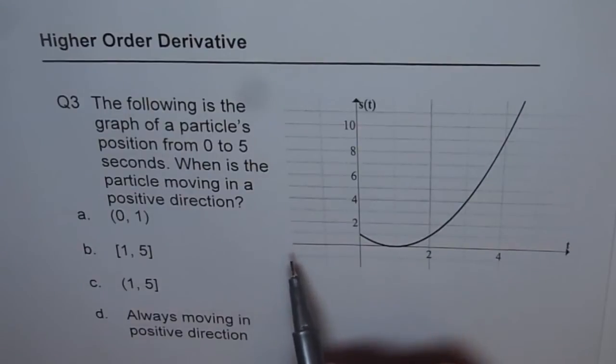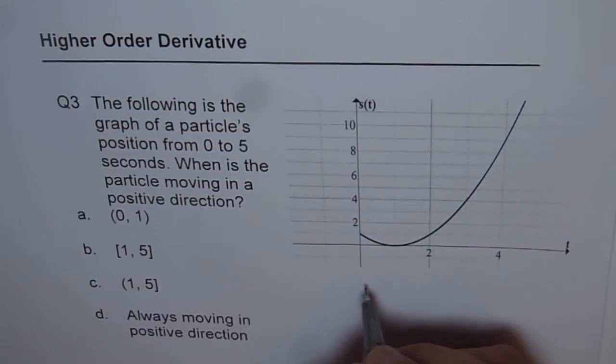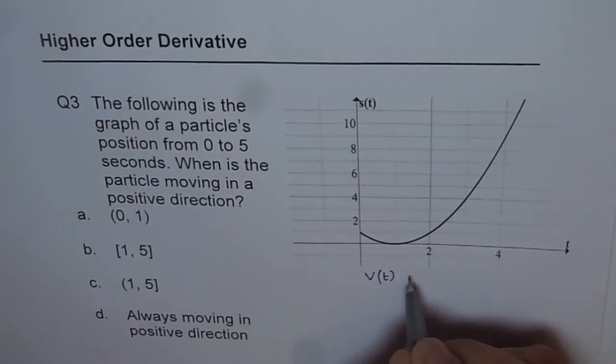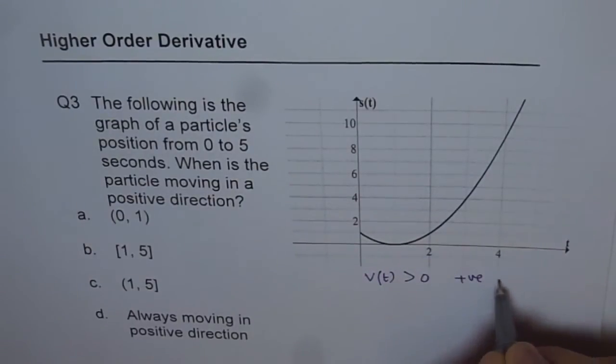we have to find when is the velocity greater than 0. So we want to find when is velocity positive, that is when is velocity greater than 0 or positive velocity.